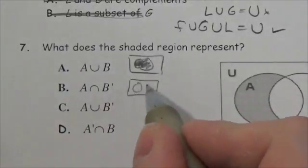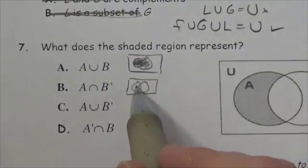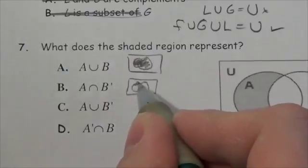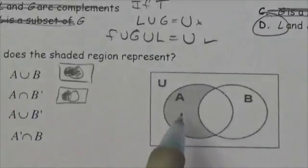A intersection not B would be where A intersects everything outside of that circle. So that's going to be this part right here. Look at that, that is this right here.